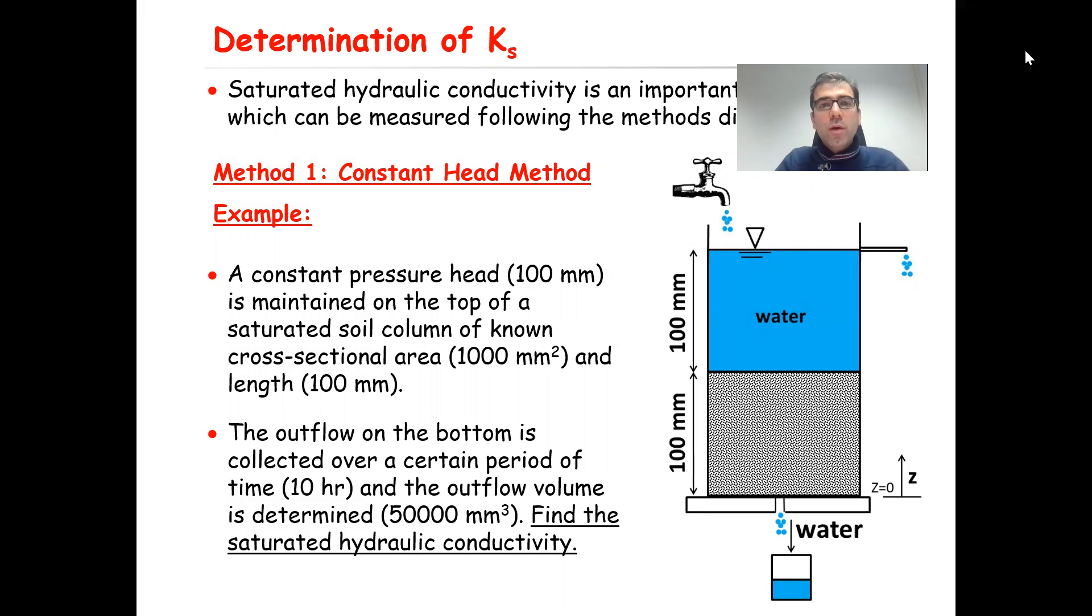One of the common methods to measure saturated hydraulic conductivity is called the constant head method, and I'm going to explain how it works by solving one example. Assume a constant pressure head of 100 millimeters is maintained on top of a saturated soil column with a known cross-sectional area of 1000 square millimeters and length of 100 millimeters.